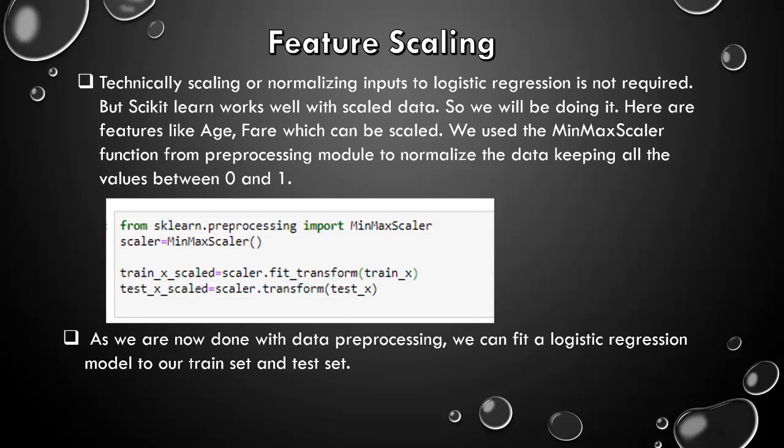Feature scaling. Technically, scaling or normalizing inputs to logistic regression is not required. But scikit-learn works well with scaled data. So we will be doing it. Here are the features like age, fare which can be scaled. We use the MinMaxScaler function from preprocessing module to normalize the data, keeping all the values between 0 and 1. We can also use standard scaler which traces all the values between minus 1 and 1. Anyway, as we are now done with data preprocessing, we can fit a logistic regression model to our train set and test set.